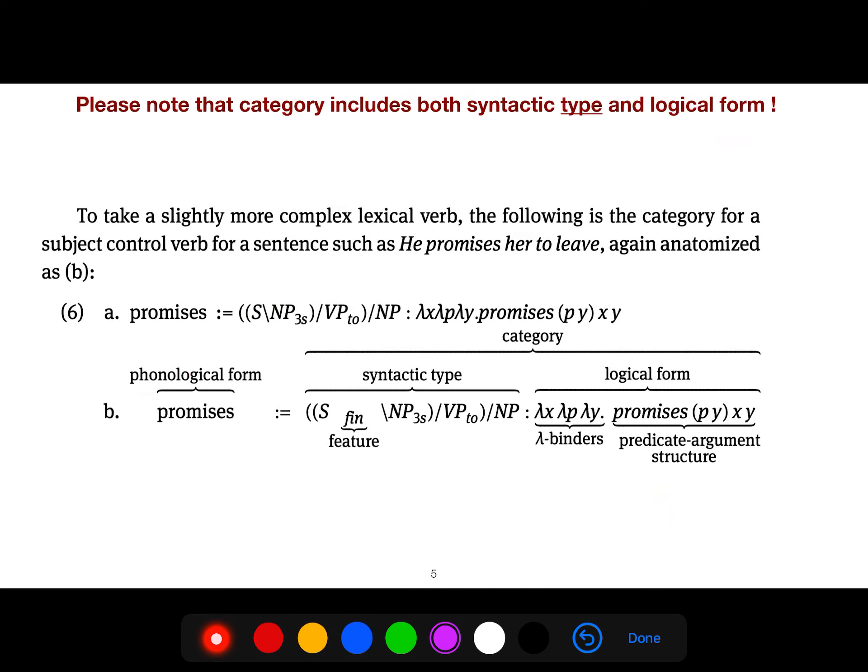Please note that category includes both syntactic type and logical form. A category is composed of syntactic type, but you may have a category that has two categories which have the same syntactic type but only differ in the logical form. When we talk about category, we mean an augmentation of syntactic type and logical form. To take a slightly more complex lexical verb, the following is a category for the subject-controlled verb for a sentence such as, He promised her to leave.